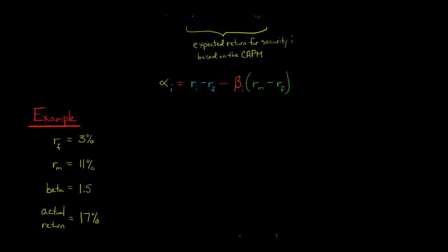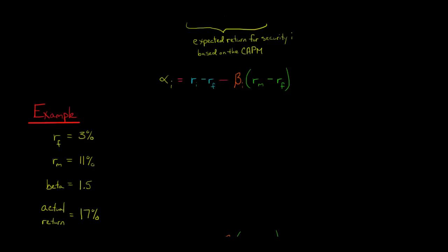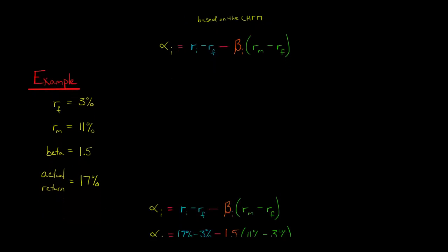The question is, after accounting for the beta, after risk adjusting, is this actual return higher or lower than what we would have expected? That's the same as saying, taking the capital asset pricing model into account, what is the expected return? Is this 17% better or worse than what was predicted?